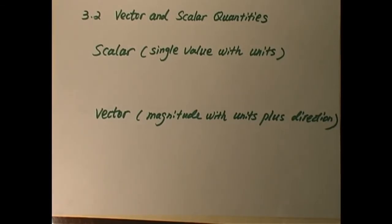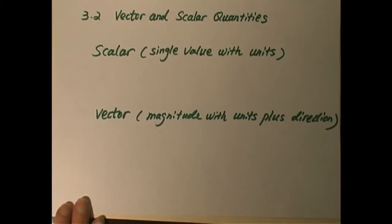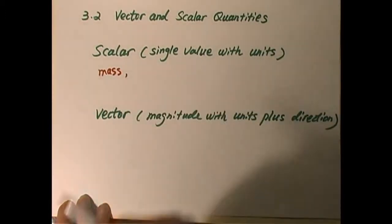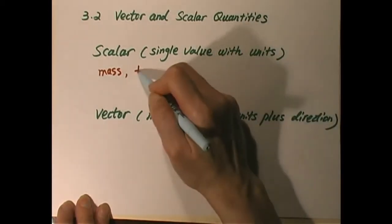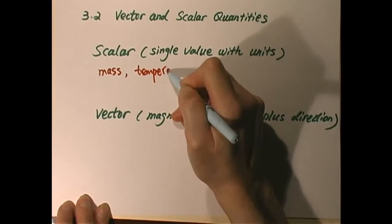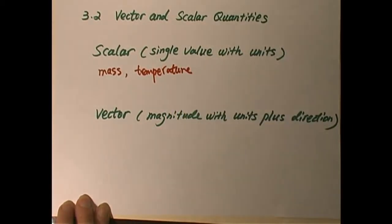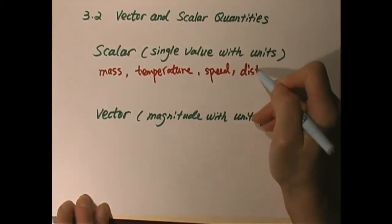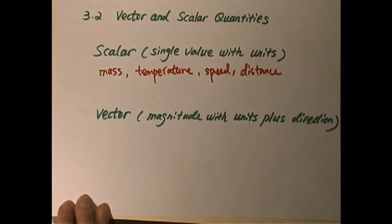So far, we learned the difference between speed and velocity. Let's have a summary. The definition of a scalar is a single value with units. Scalars we know include mass — because mass doesn't need direction — and temperature, which is also a scalar. Speed and distance are also scalars, and there are many more physical quantities that are scalar.